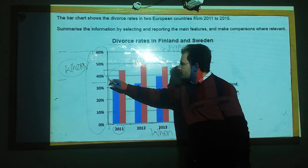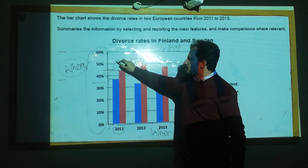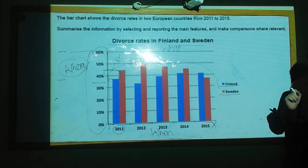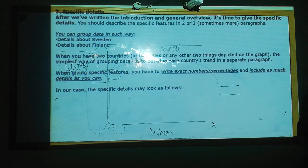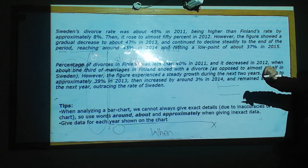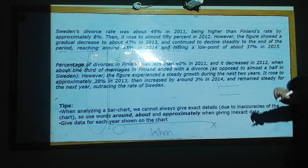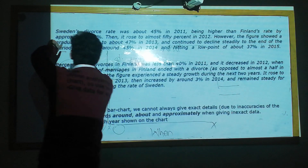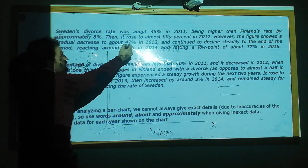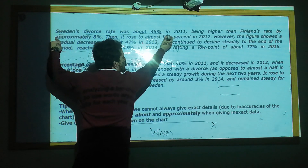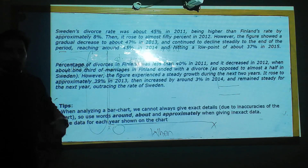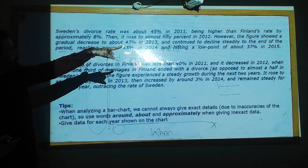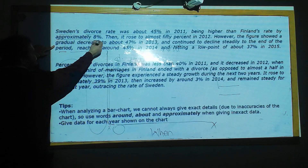What is the difference between them? It's almost 8%. Sweden's divorce rate was about 45% in 2011, being higher than Finland's rate by approximately 8%.